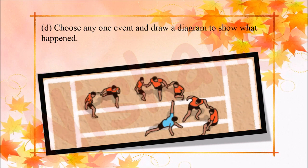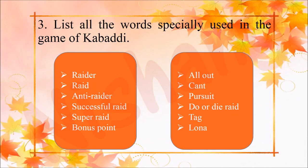Point D: Choose any one event and draw a diagram to show what happened. You have to read the chapter, pick an important event where 9A or 9B won, and draw a diagram.